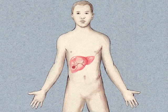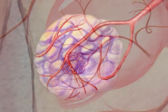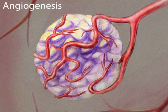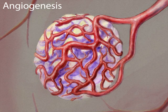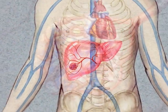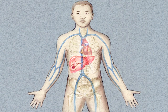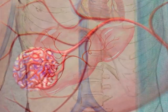Anti-angiogenesis treatments for liver cancer: angiogenesis is the process of making new blood vessels. In a person with cancer, this process creates new blood vessels that give a tumor its own blood supply and allow it to grow. Anti-angiogenic drugs target the blood vessels that the tumor needs to survive. Treatment can be given intravenously or orally.